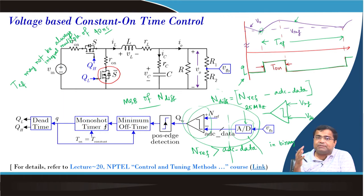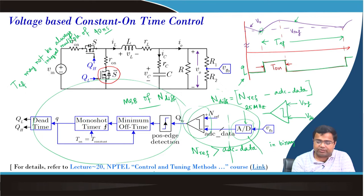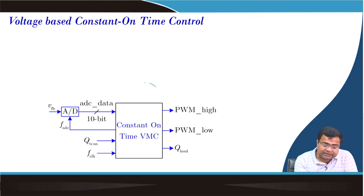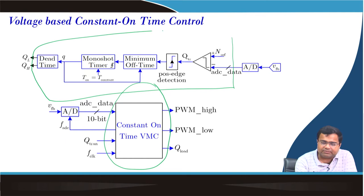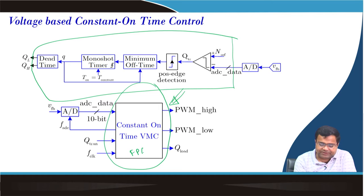You can implement this logic digitally or in analog, but this whole circuit is in the digital domain, and we discussed this methodology in lecture 20 in our earlier MPTL course. Now we want to design this particular thing for constant on-time. We are taking from the ADC data to the dead time — this complete block is realized by this block and it will be sitting inside the FPGA. How do you design this block and how do you design the monoshot timer on the off time?